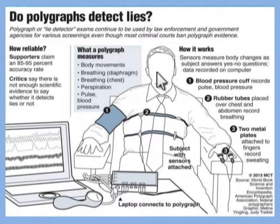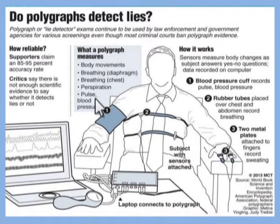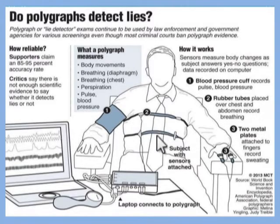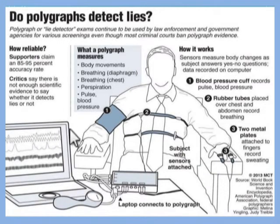The polygraph works as a lie detector. The 4 responses measure body movements, breathing rates, respiration, and pulse movements. First, blood pressure is recorded using the sphygmomanometer. Second, rubber tubes placed around the chest and abdominal cavity measure lung and diaphragm movement. Third, two metallic plates attached to the fingertips record sweating. All representations are displayed in a graphical format as shown here.